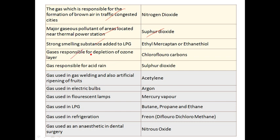Chlorofluorocarbon (CFC) is responsible for ozone depletion. The gas responsible for acid rain is sulfur dioxide — sulfur dioxide is the main gas responsible for acid rain.